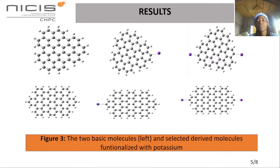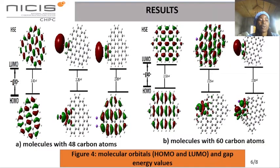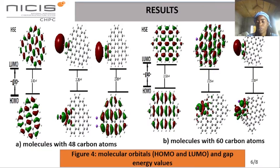Results. Figure 3 shows the optimized structures of the study molecules. Figure 4 represents the highest occupied molecular orbital, HOMO, and lowest unoccupied molecular orbital, LUMO, and the gap energies of the study molecules. The values of the gap energies found for the basic molecules are in agreement with those found in the literature. The derivatives have smaller gap energies than the base molecules, which makes them better semiconductors.